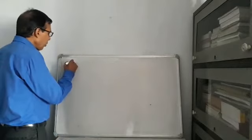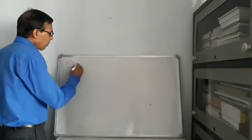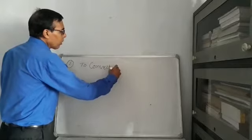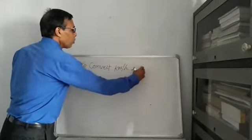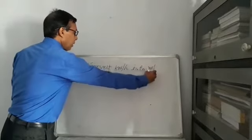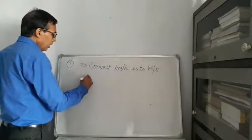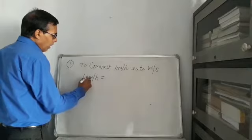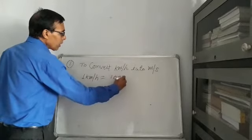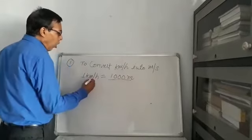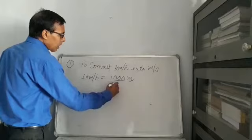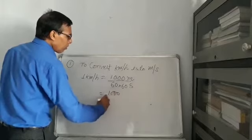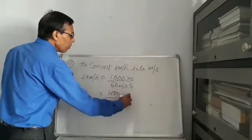First, you need to know how to convert kilometers per hour into meters per second. We know that 1 kilometer per hour equals 1000 meters, and 1 hour equals 3600 seconds — that is 60 into 60. So 1 km/h equals 1000 divided by 3600 meters per second.